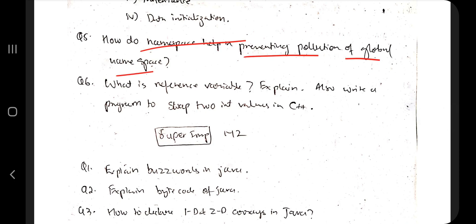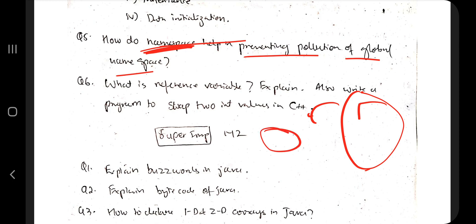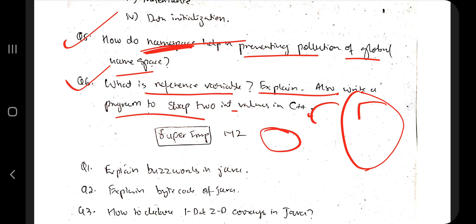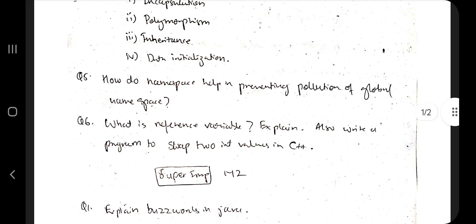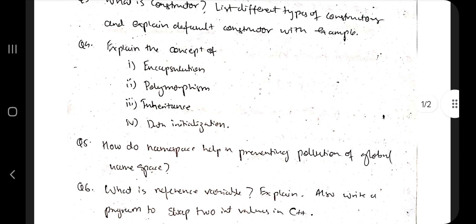The next question is: how do namespaces help in preventing pollution of the global namespace? A namespace is a defined space identified by a name — it is a block of code defined under a name so it can be referenced in different parts of the code. Also important: what are reference variables? Explain how to swap two variables in C++. This is a very important question from the exam point of view — make sure you go through it.